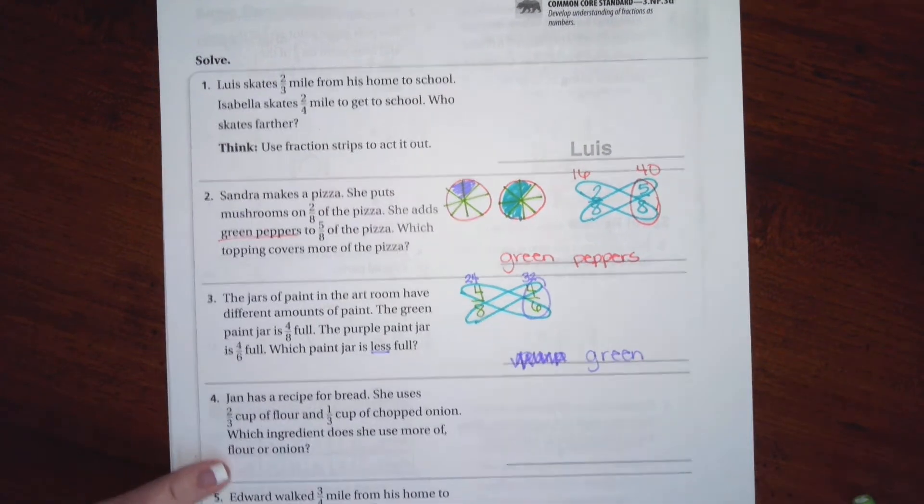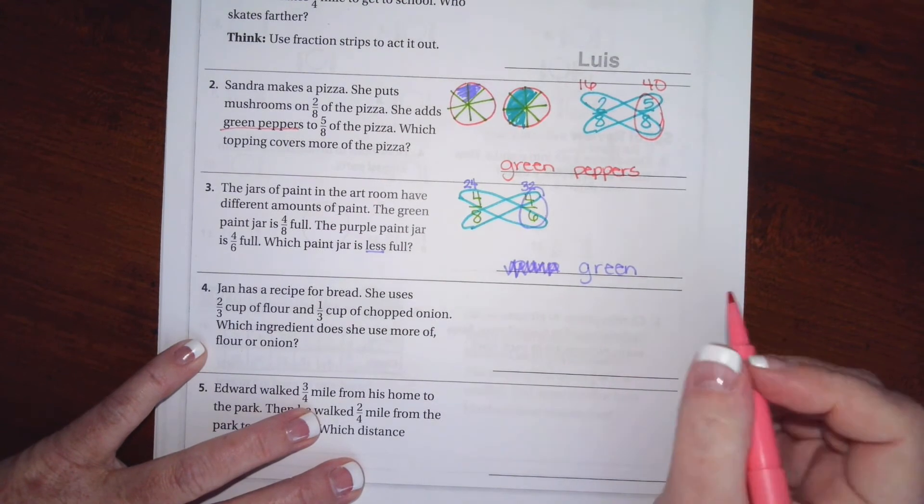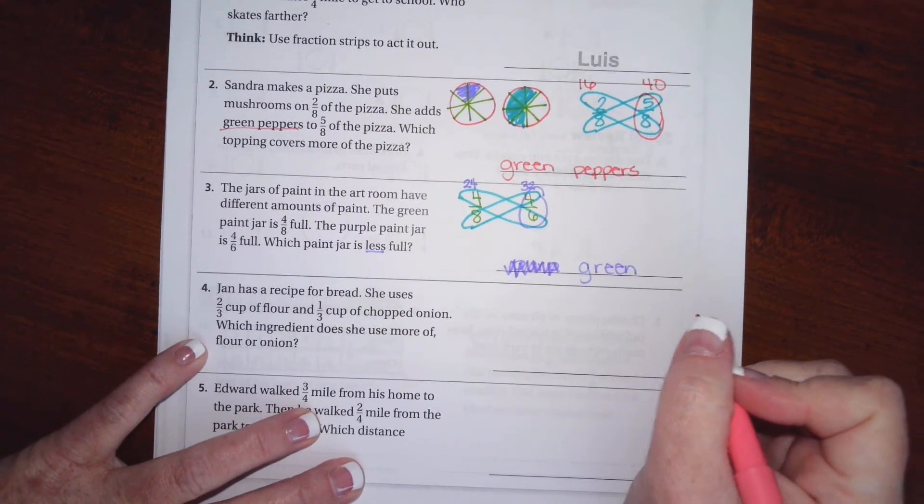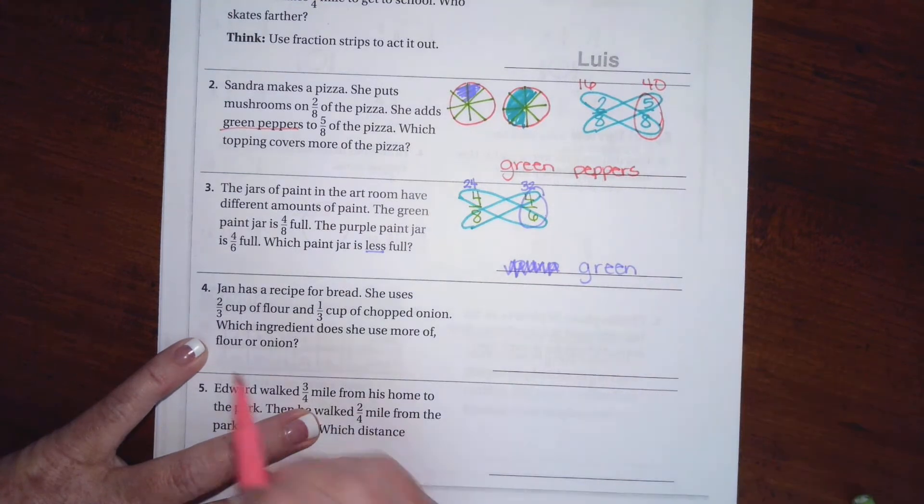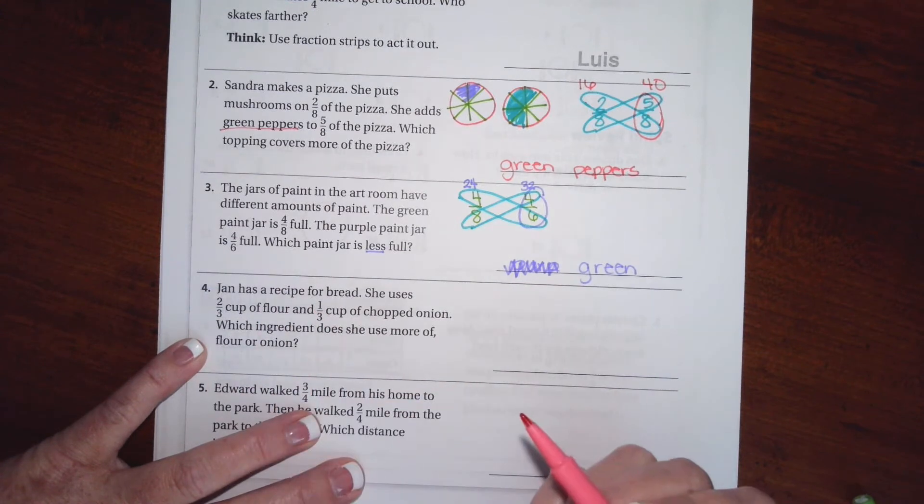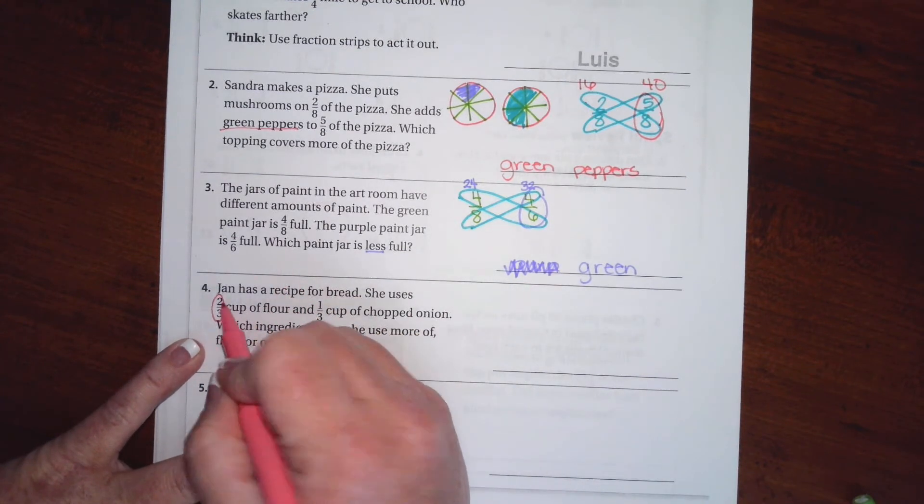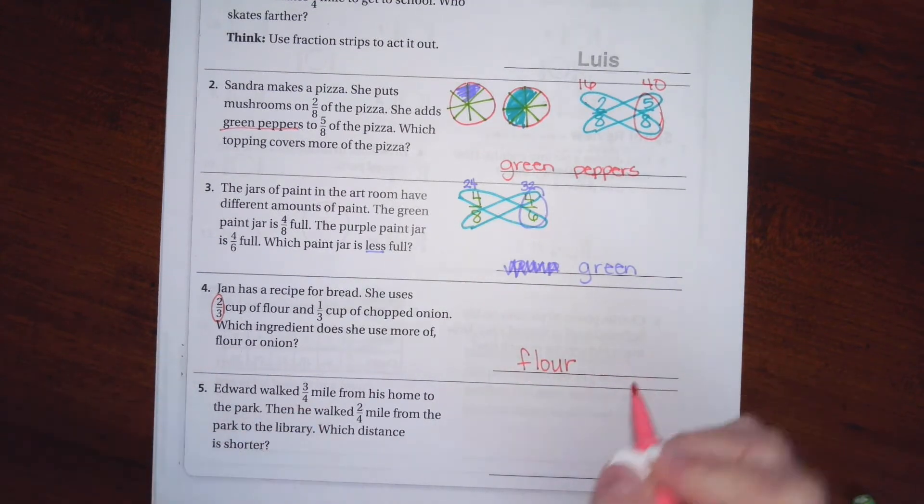All right. Jan has a recipe for bread. She uses 2/3 cup of flour and 1/3 cup of half onion. Which ingredient does she use more of? Well, they have the same denominator. One of them has a 2 up top and one of them has a 1 up top. Well, 2 is going to be the bigger one. So that's going to be flour.